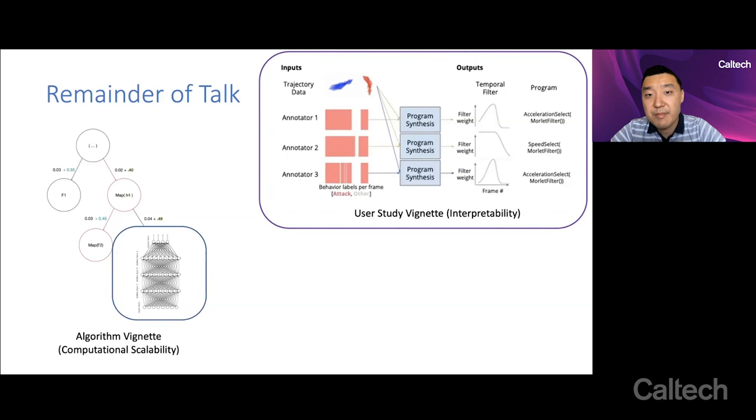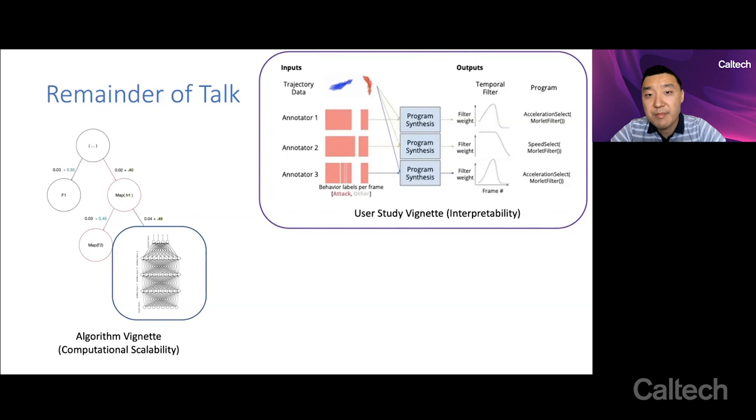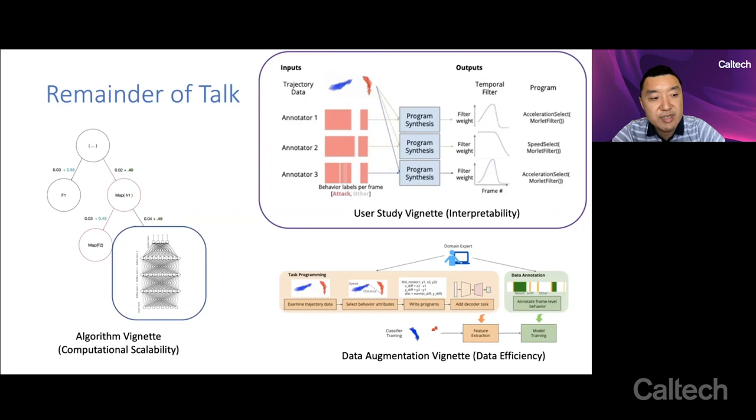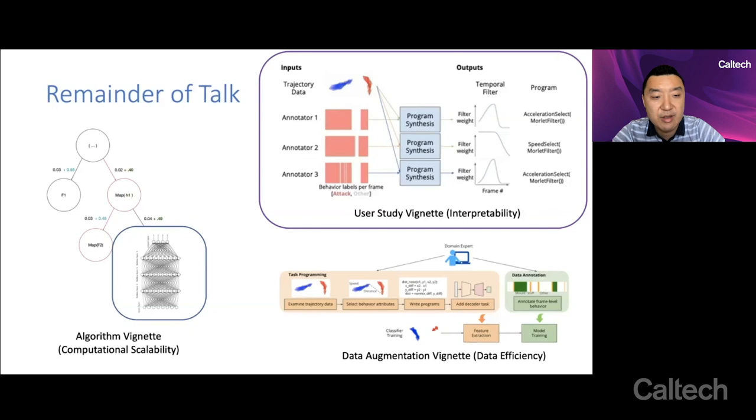The second vignette is on a user study vignette. So how do we sort of think about using these kinds of ideas for downstream analysis? I should mention that these works are still in their early stages. And so I'm really excited for the progress that we're making and where we're headed. But this is just a flavor of what we've done already so far.